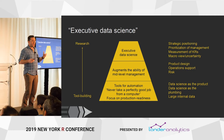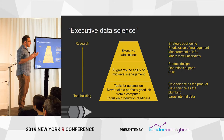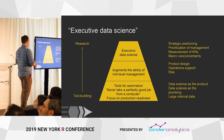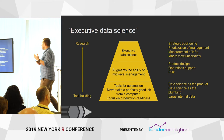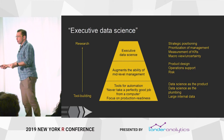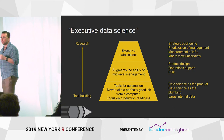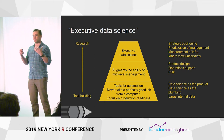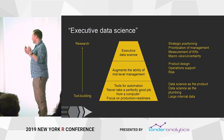My talk today is slightly on the career end of things, because people keep asking what I do and I don't really have a word for it. I like to think of the world of data science as having three tiers, depending on who the audience is and what you're trying to optimize. At the bottom are tools for automation — the 'never take a perfectly good job from a computer' sort of work — building tools that go into production.